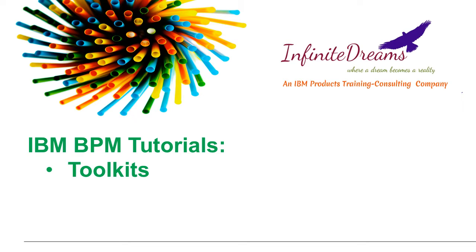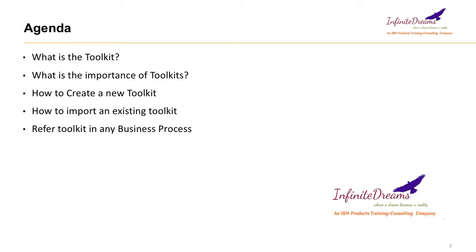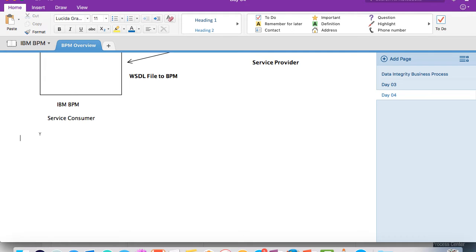In this IBM BPM tutorial, we will learn about toolkits. Toolkit is a very important concept in IBM BPM. Almost every new project which we develop using BPM, we will create a separate toolkit. We will discuss what is the toolkit, what is the importance of the toolkit, and we will also create a toolkit. We will also import the existing toolkit and refer the toolkit in our existing business process. Now let's first understand what is the toolkit.